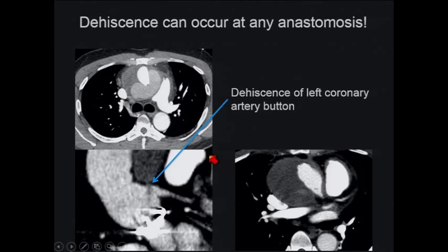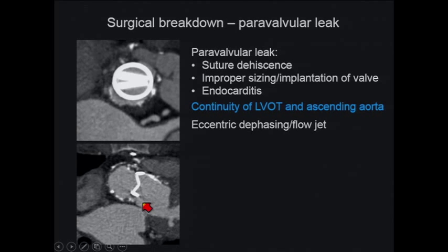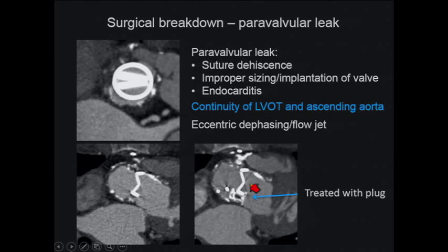Here's a patient with communication between the LV outflow tract and the aorta — not a pseudoaneurysm, but a paravalvular leak. This was about 13 years post his third aortic valve replacement for congenital aortic stenosis, now presenting with dyspnea on exertion and hemolysis. Paravalvular leaks show continuity between the LV outflow tract and the ascending aorta — seen from infection, improper sizing, or implantation. On MR, we may see an eccentric dephasing or flow jet. He was treated percutaneously with two plugs, which significantly reduced the leak and improved his symptoms.